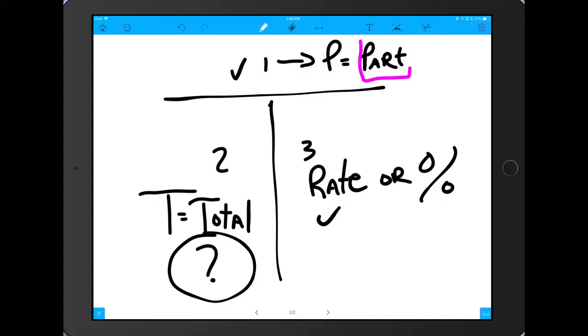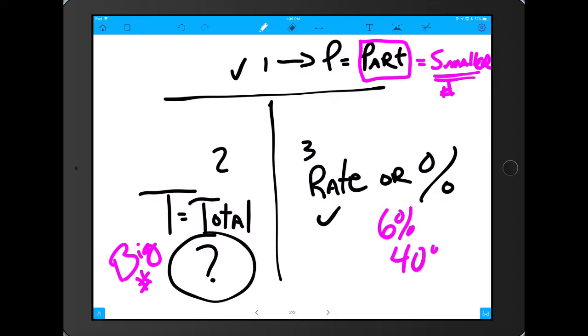When you look at the P or part, always think smaller, the smaller number. When you look at the T, it's the bigger number. When we're looking at rates, such as 6% commission or 40% of something, you know that if there's a percent sign or a rate, it's going to go right down here in the third slot.